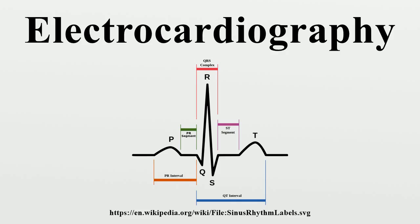All of the waves on an EKG tracing and the intervals between them have a predictable time duration, a range of acceptable amplitudes, and a typical morphology. Any deviation from the normal tracing is potentially pathological and therefore of clinical significance. For ease of measuring the amplitudes and intervals, an EKG is printed on graph paper at a standard scale.